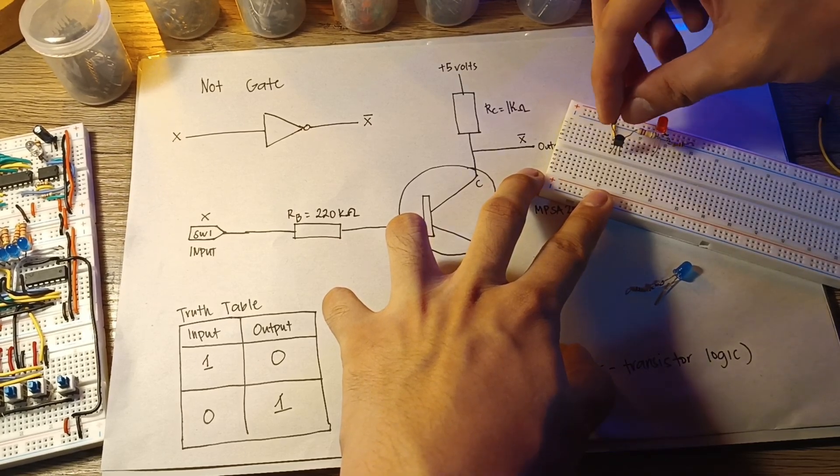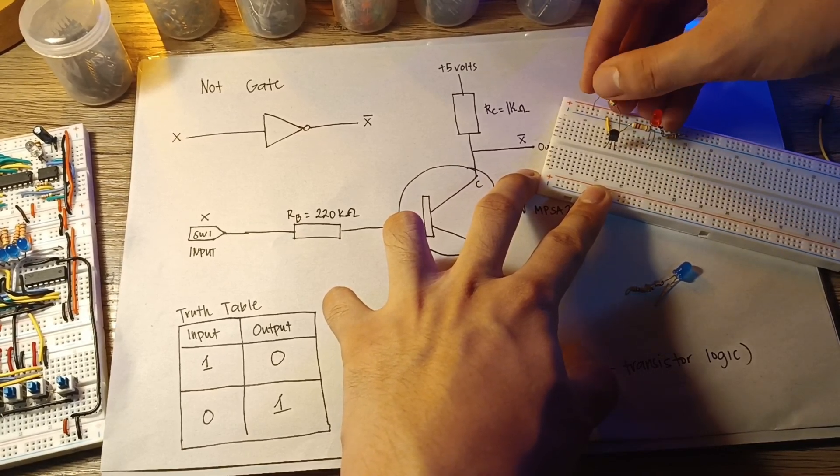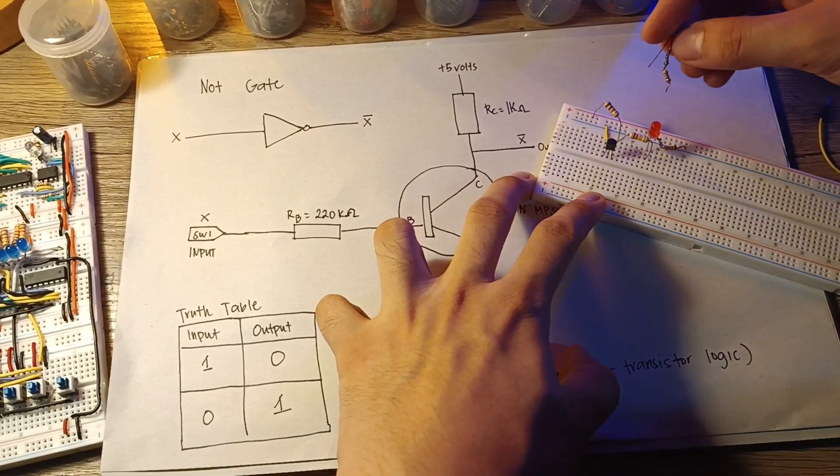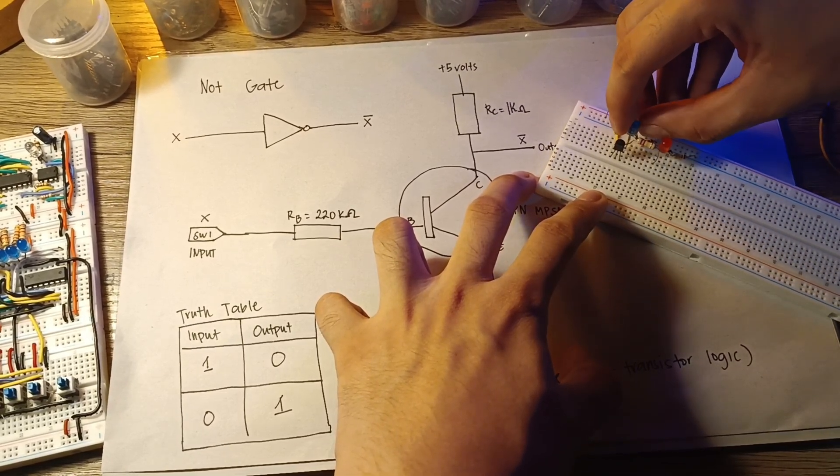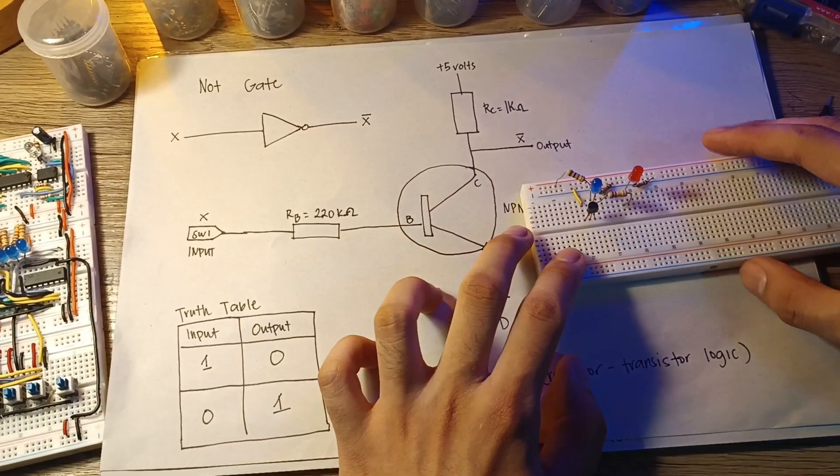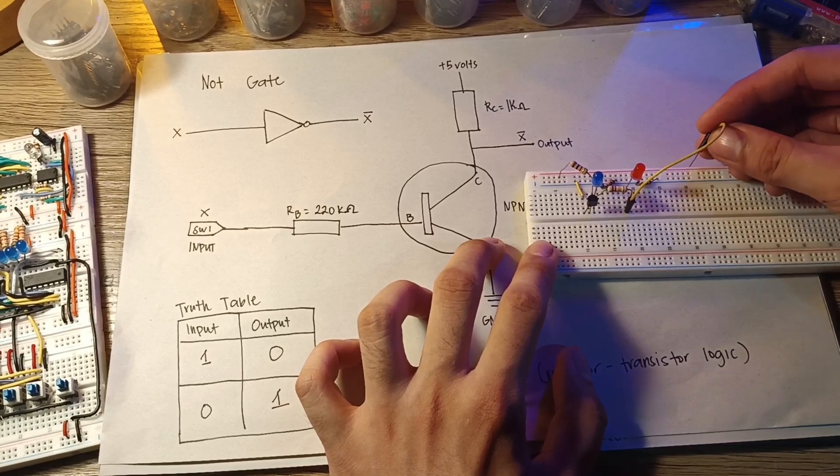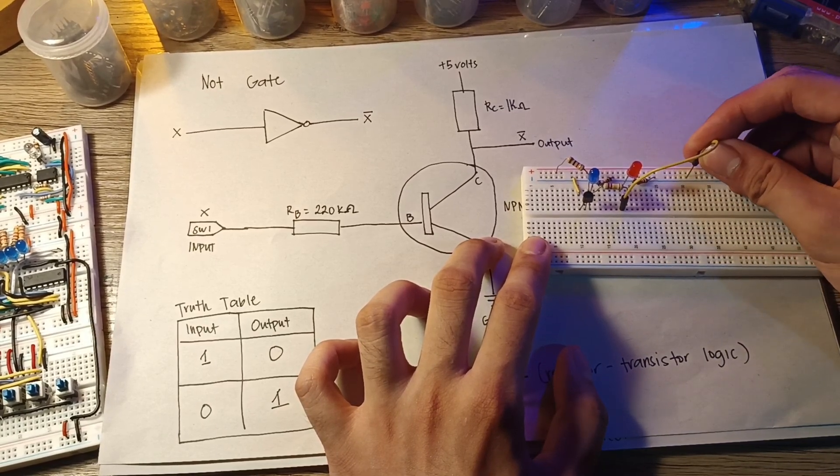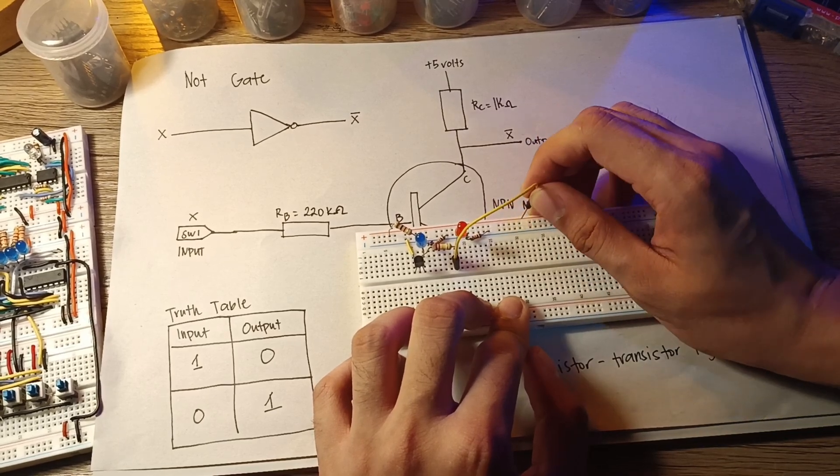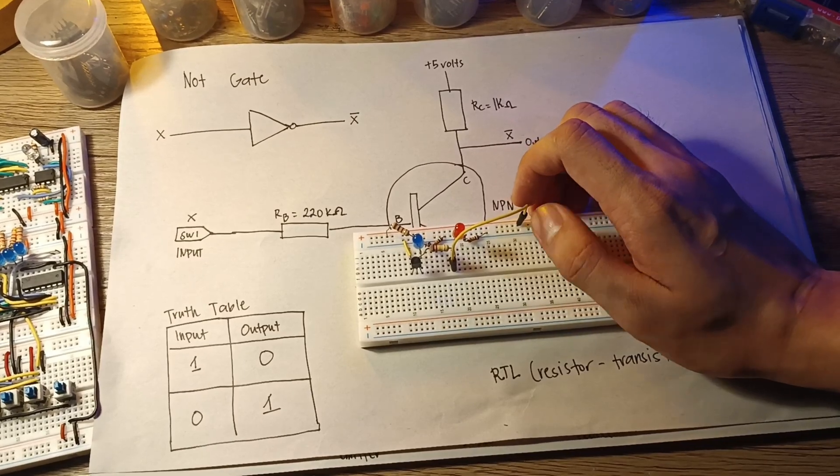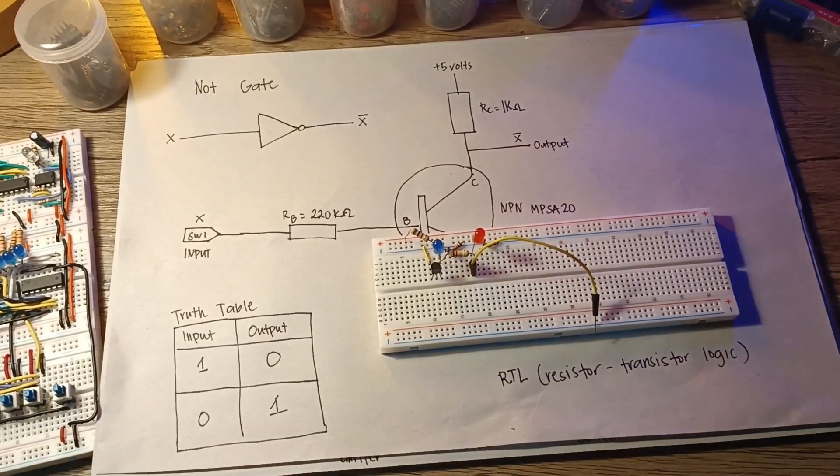I will just connect it to the 5 volts, to the positive rail of the breadboard. I will put an LED also for an indicator. This is our switch. I don't have a switch, so I will just put it in a power rail. If I put it in the negative rail, we will input a zero. If I put it in a positive rail, we will input a one or 5 volts. Let's power this thing.